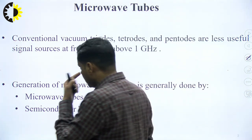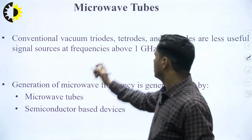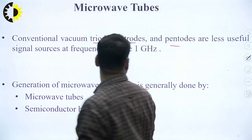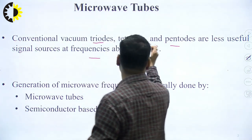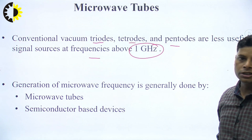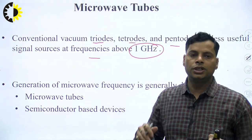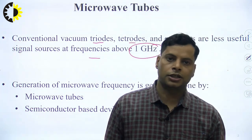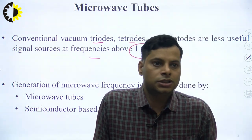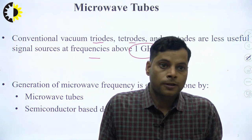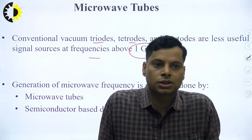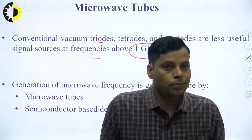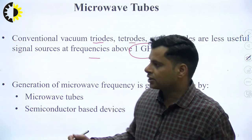As you can see, the conventional tubes like triodes, tetrodes, and pentodes are very less useful as signal sources at frequencies above 1 GHz. That means when we are moving to higher frequency signals — microwave signals in the range of gigahertz — these conventional tubes are less useful.